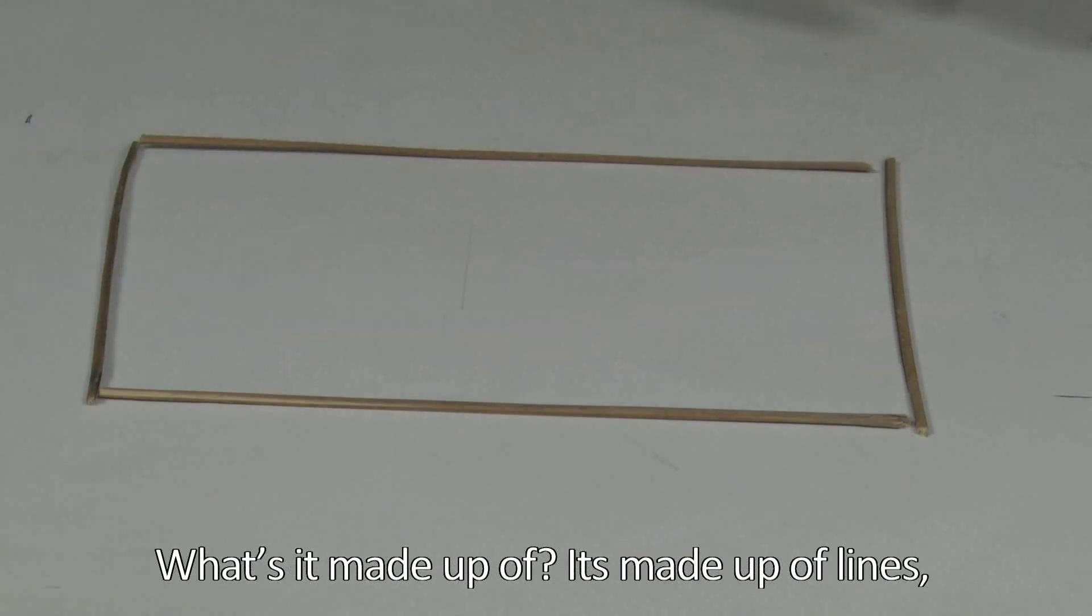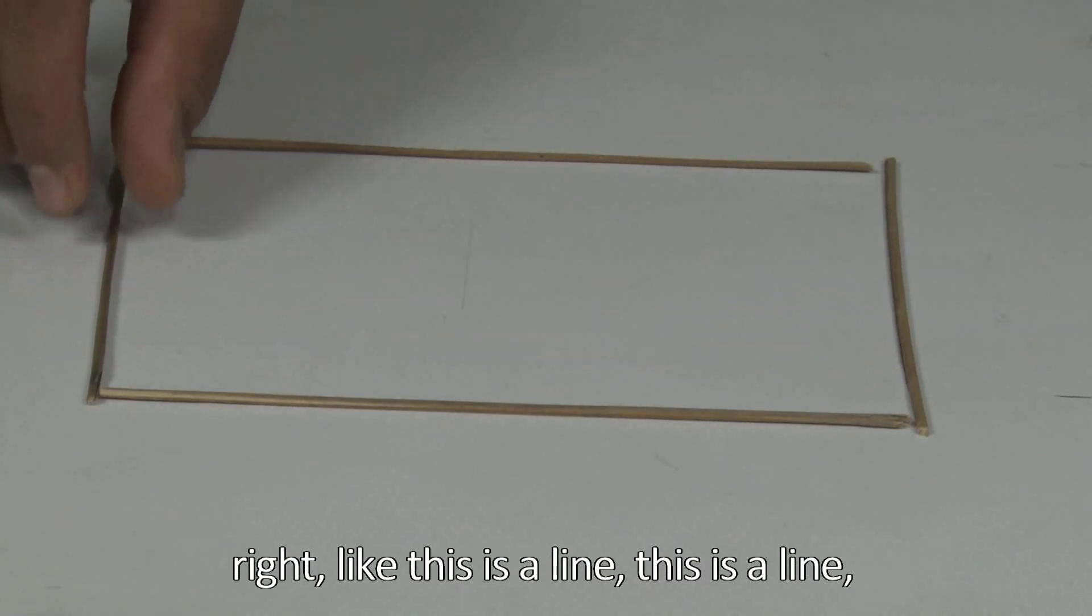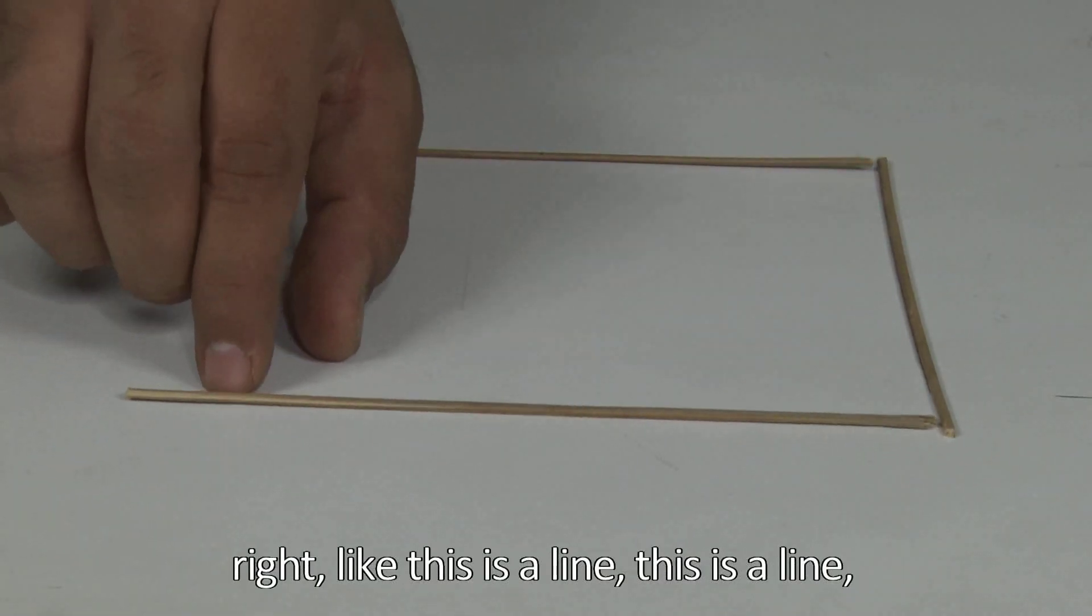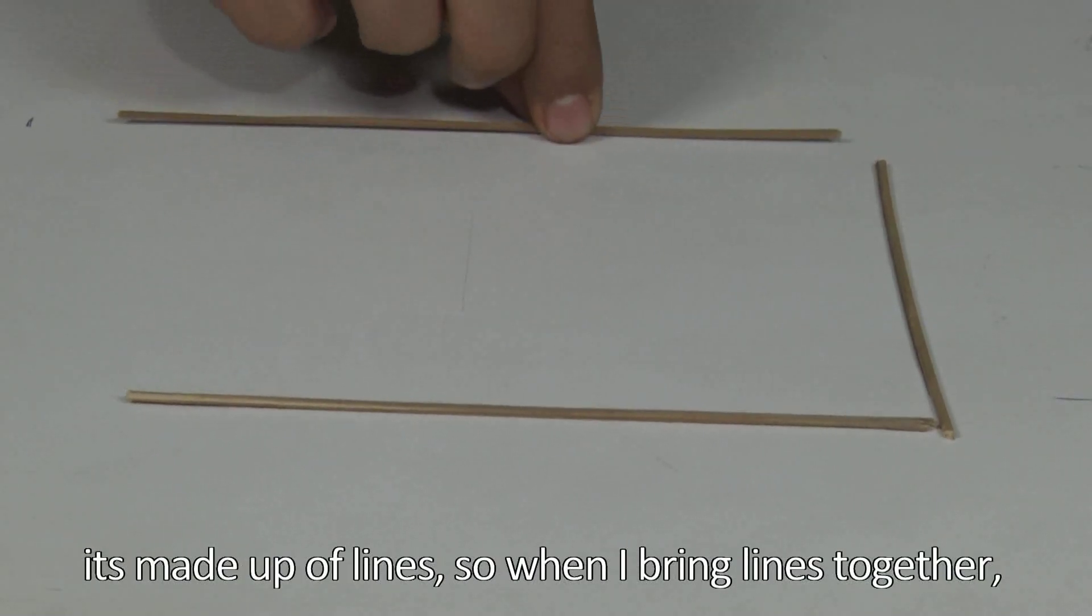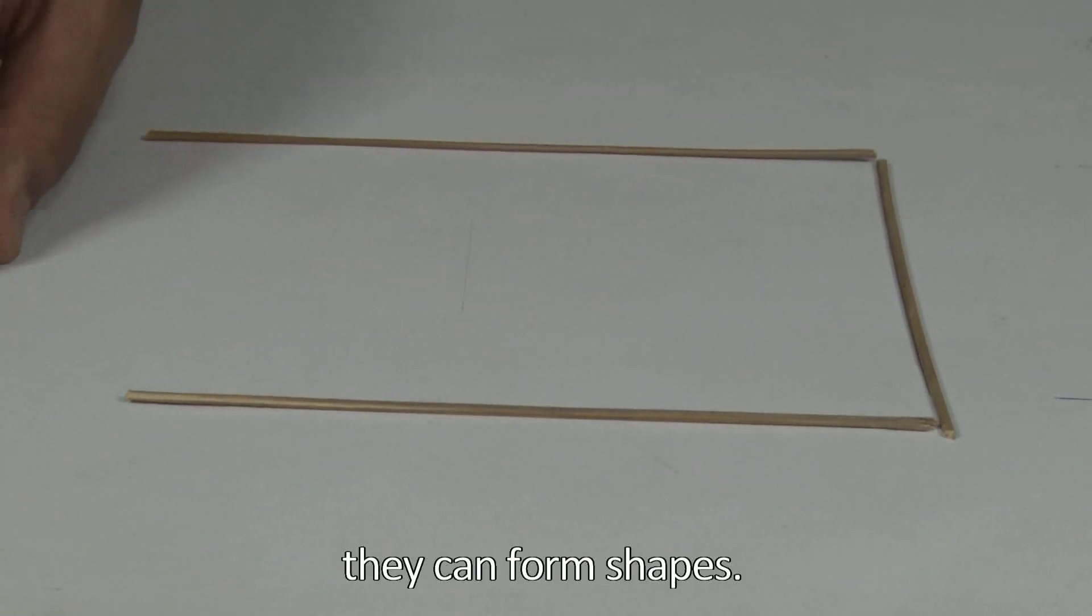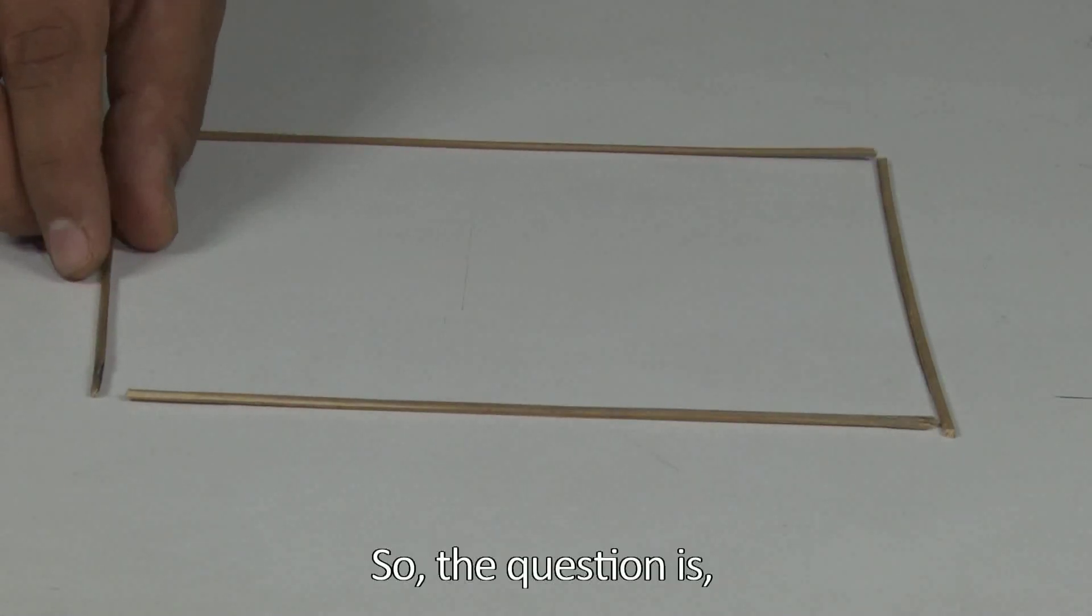What is it made up of? It's made up of lines, right? Like this is a line, this is a line. So when I bring lines together, they can form shapes. The question is,